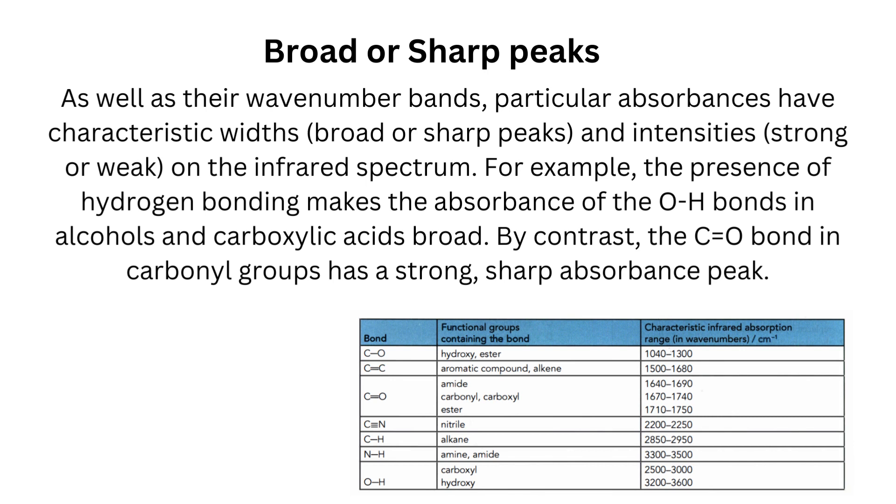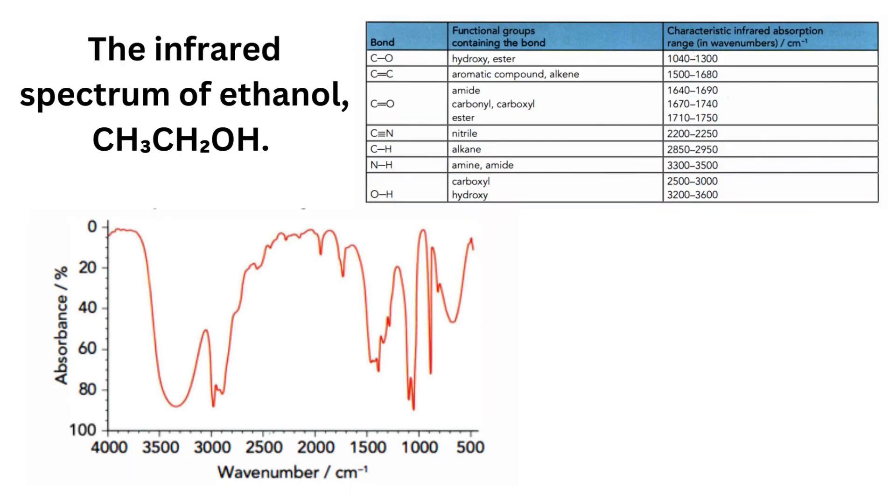By contrast, the C=O bond in carbonyl groups has a strong, sharp absorbance peak. An example of the infrared spectrum of ethanol is shown. As you can see, a broad peak is indicating that of the alcohol O-H group.